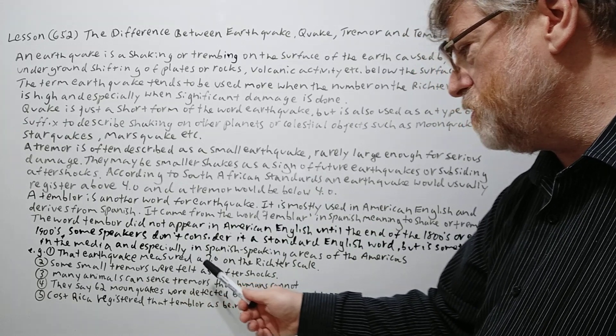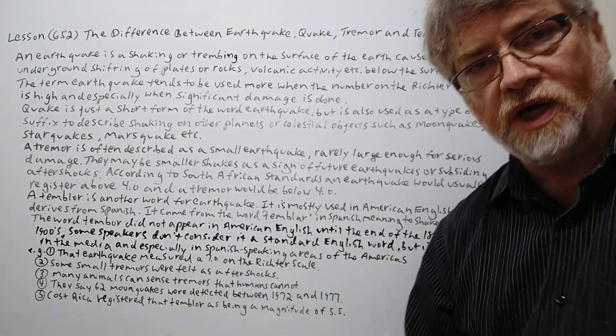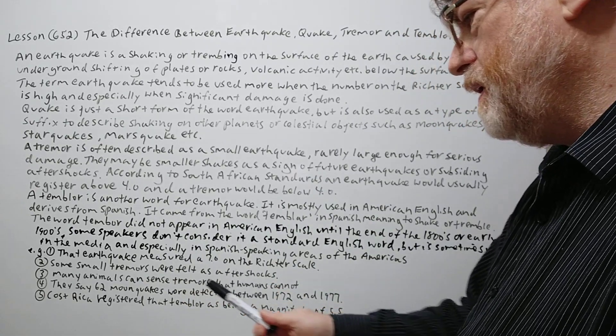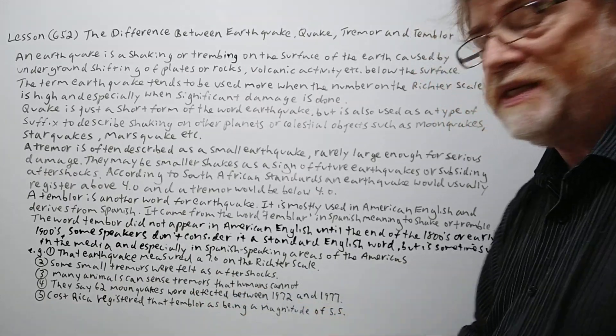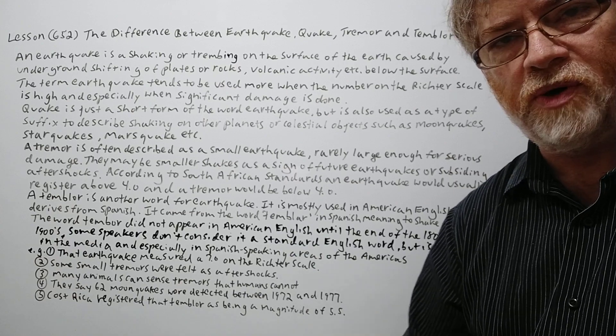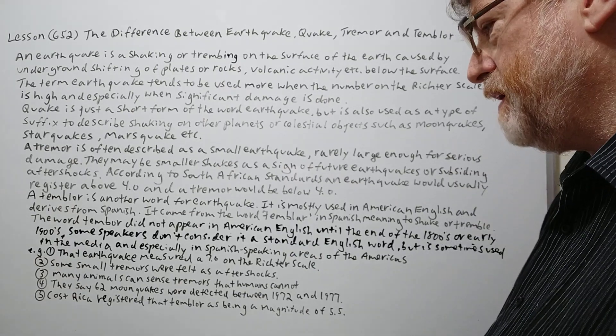Some small tremors were felt as aftershocks. Okay. Good. Number three. Many animals can sense tremors that humans cannot. So especially if they're low like 3.0 or 2.0 or something like that.